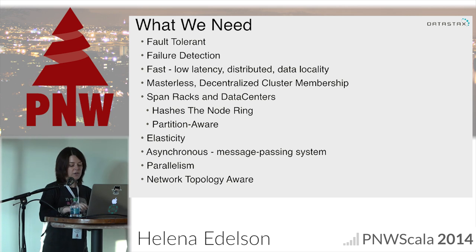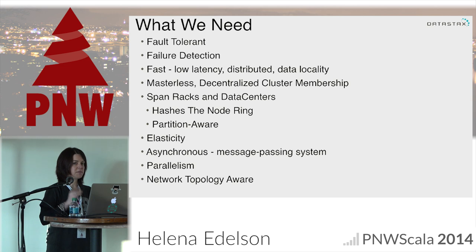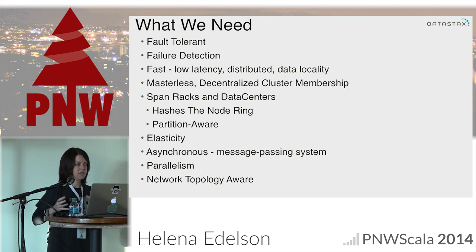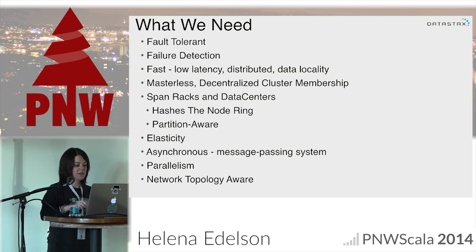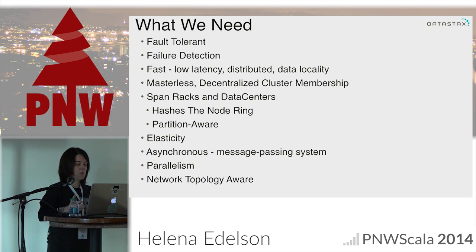We need to replicate across multiple data centers, provide low latency, and survive regional outages. Both Cassandra and Spark are partition aware. When I get into the Spark Cassandra connector, I'll explain how Cassandra is so node-aware and partition-aware that it feeds partition information to Spark, and that is how Spark does its own partitioning. Kafka and Akka have a different notion of partitioning. We also need to be network topology aware, which Cassandra is, and be able to scale to as many nodes as we need.